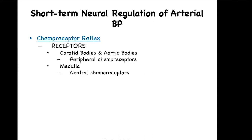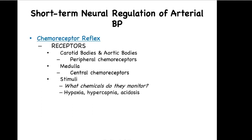The central chemoreceptors are monitoring pH related to carbon dioxide levels. The stimuli will be a decrease in oxygen, an increase in carbon dioxide, or a decrease in pH. The central chemoreceptors will only pick up a change in pH — a drop in pH related to carbon dioxide levels — because carbon dioxide can cross the blood-brain barrier, but metabolic acids cannot. Therefore, metabolic acids will not influence the central chemoreceptors. Hypoxia is low oxygen in the arteries; hypercapnia is elevated carbon dioxide in the blood; and acidosis is decreased pH below 7.35.